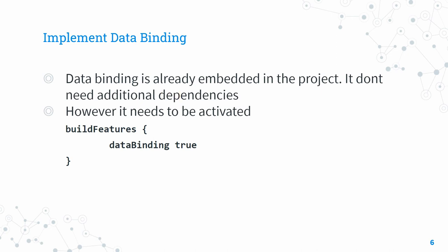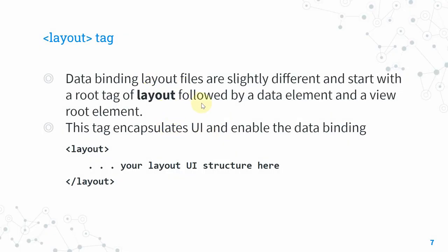However, data binding needs to be activated. To activate it, write buildFeatures { dataBinding = true } in your module-level Gradle file. Once activated, your layout can bind data. To enable data binding features in a layout, you must encapsulate the UI with a root layout tag — your actual layout goes inside it, wrapped with opening and closing layout tags.